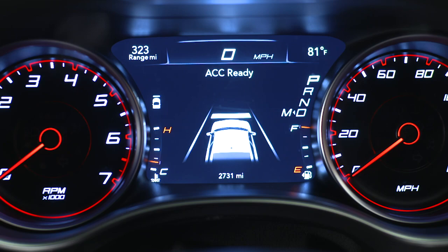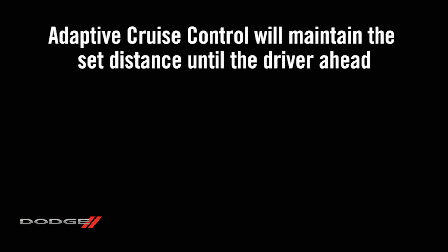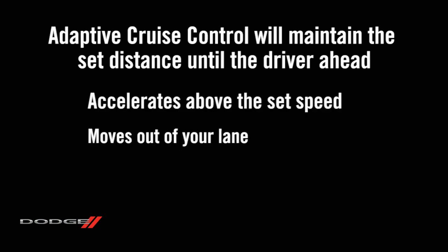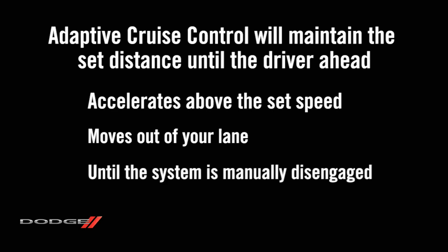You'll see the sensed vehicle indicator icon in the instrument cluster. The system will maintain the set distance until the driver ahead accelerates above the set speed, moves out of your lane, or until the system is manually disengaged.